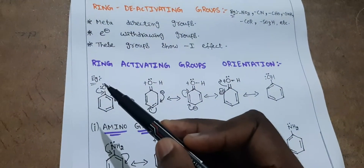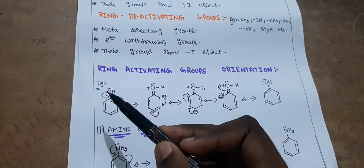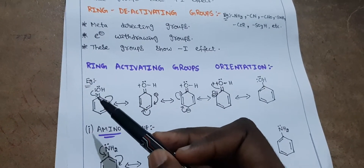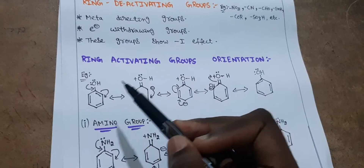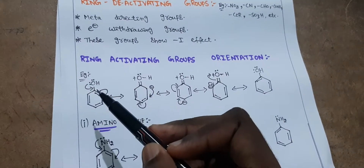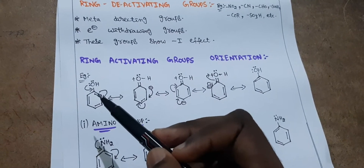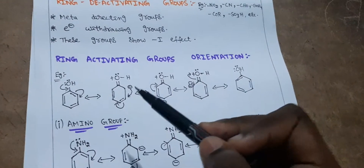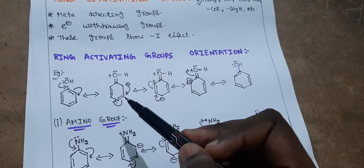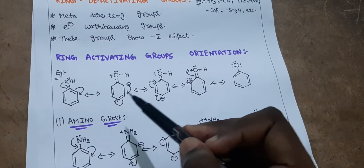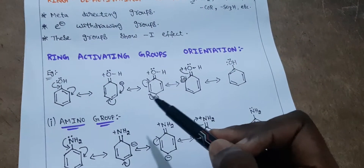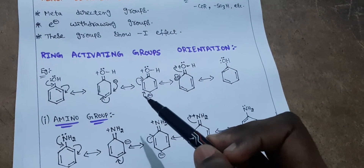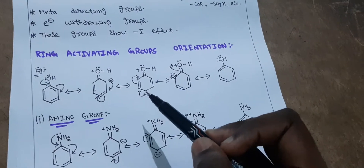Now let's see the orientation of ring activating groups. A ring activating group transfers its electrons towards the benzene ring — it forms a double bond and we get a positive charge. Due to carbon's valency, it cannot accommodate five bonds, so this lone pair of electrons shifts towards the next carbon, where a negative charge appears. This bond again shifts, and through resonance, positive and negative charges alternate around the ring.